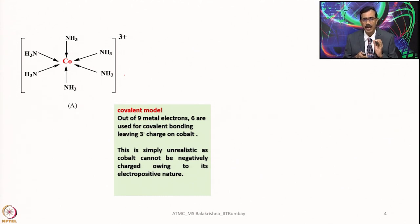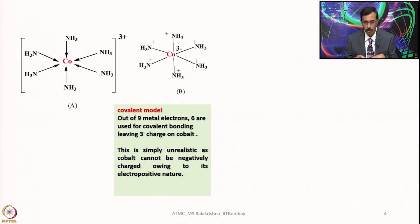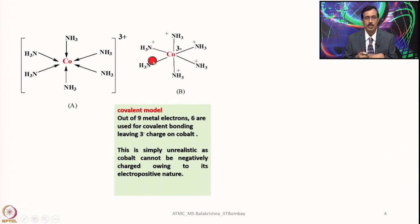This is simply unrealistic, as cobalt cannot be negatively charged owing to its electropositive nature. Since it is positively charged, it is not appropriate to assume it as negatively charged. Owing to this, the covalent model was ruled out. Out of 9 electrons, 6 are utilized for making bonds with ammonia and the remaining 3 are considered as negative charges — this charge distribution is simply unrealistic.